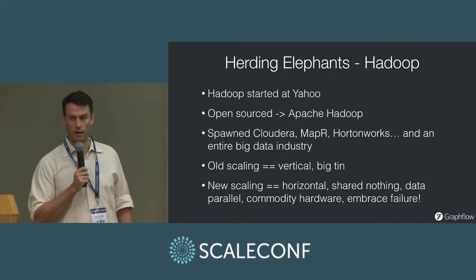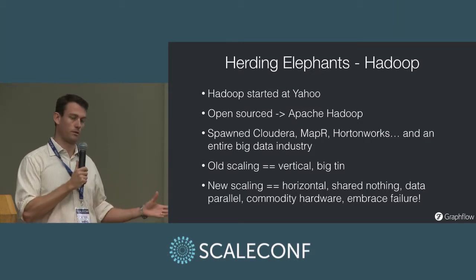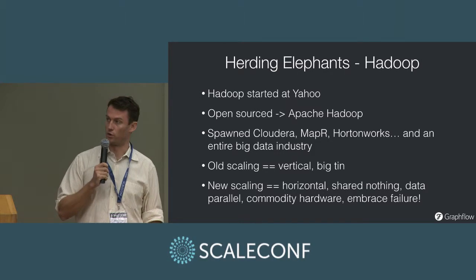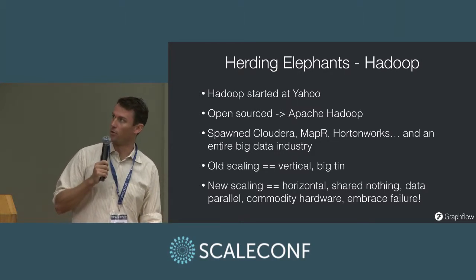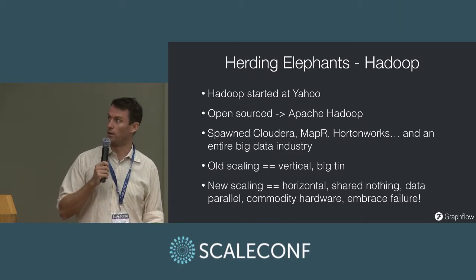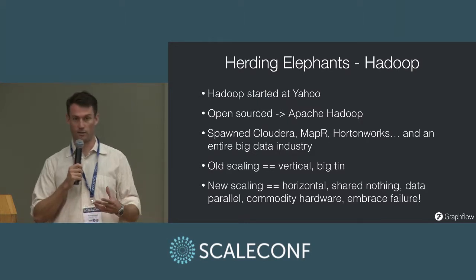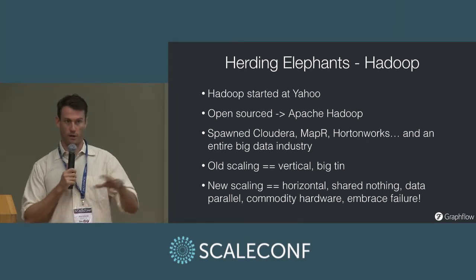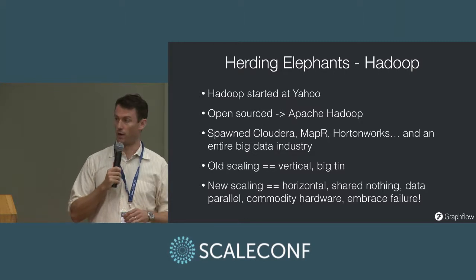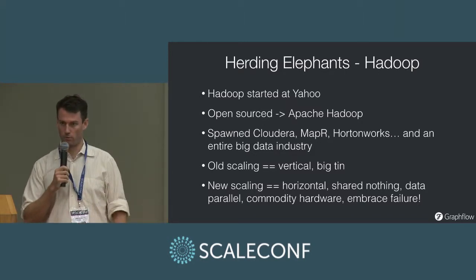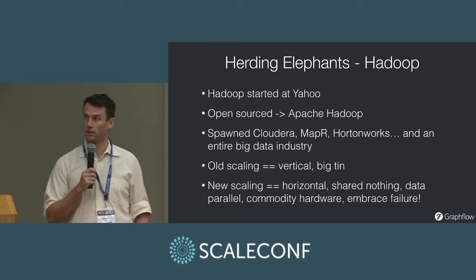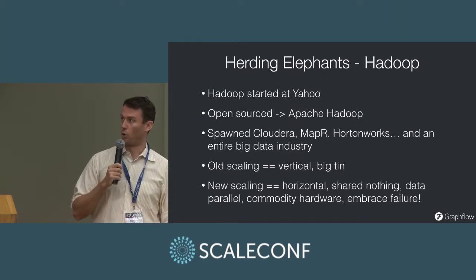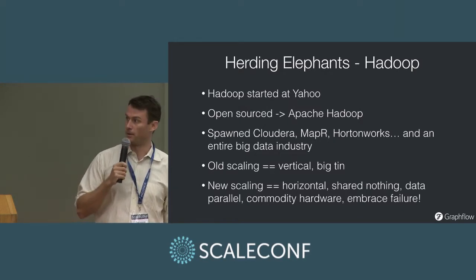What is Hadoop? It started at Yahoo. They essentially took the Google papers for distributed file system and MapReduce and created their own version, which they called Hadoop. The name, as with most Apache projects, comes from a funny name — Hadoop comes from Doug Cutting's son's toy elephant. They built this internally and now have a massive deployment running more than 40,000 to 50,000 nodes. They took the decision to open source everything, which spawned an entire big data industry. Cloudera was one of the first companies — kind of the Red Hat of data processing. And now a new era with projects like Spark and Kafka, Databricks, and so on.